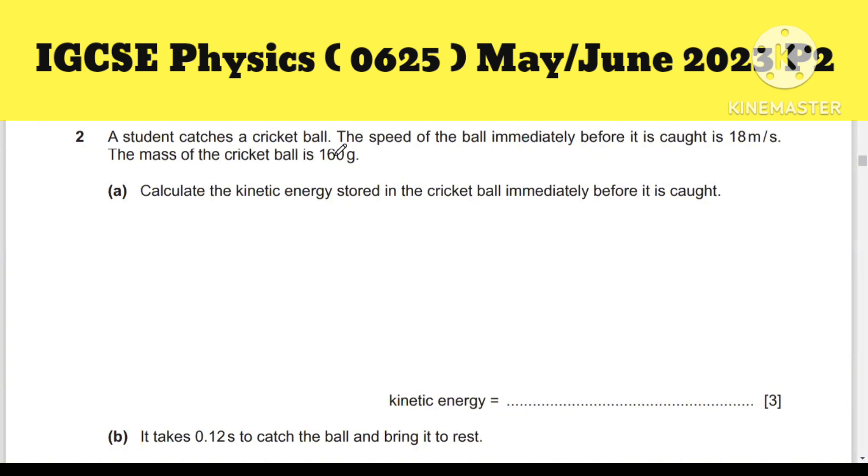A student catches a cricket ball. The speed of the ball immediately before it's caught is 18 m/s. The mass of the cricket ball is 160 grams. Calculate the kinetic energy stored in the ball immediately before it's caught. We know that kinetic energy equals half mass times velocity squared.